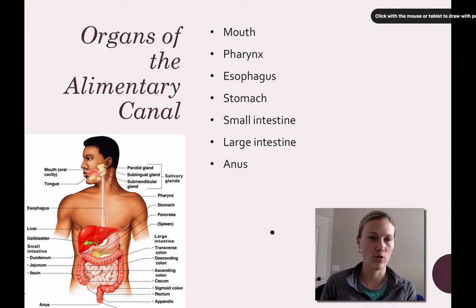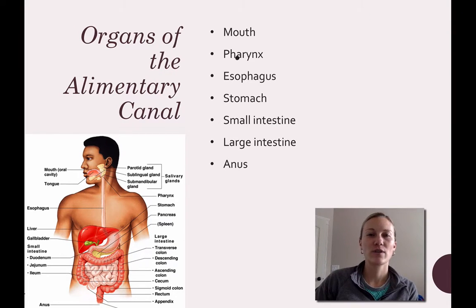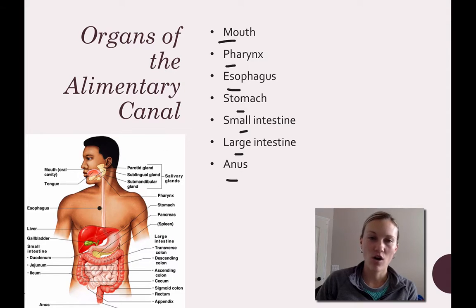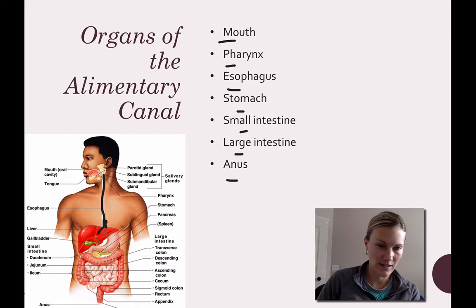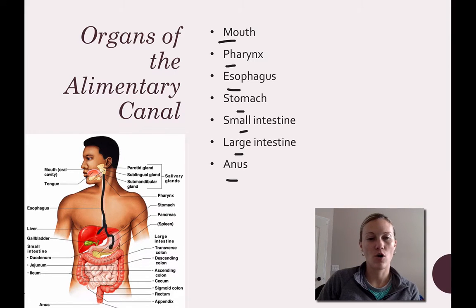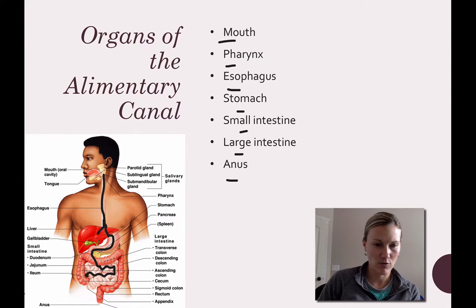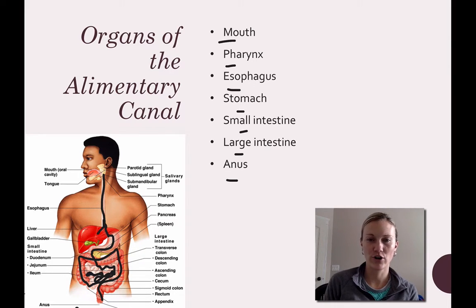Going through the alimentary canal in order: mouth, pharynx, esophagus, stomach, small intestine, large intestine, and anus. Food starts in your mouth, then as you swallow it goes into your pharynx, then down the esophagus into your stomach. From your stomach it goes into your small intestine, wraps around, then into your large intestine and back out through your anus.